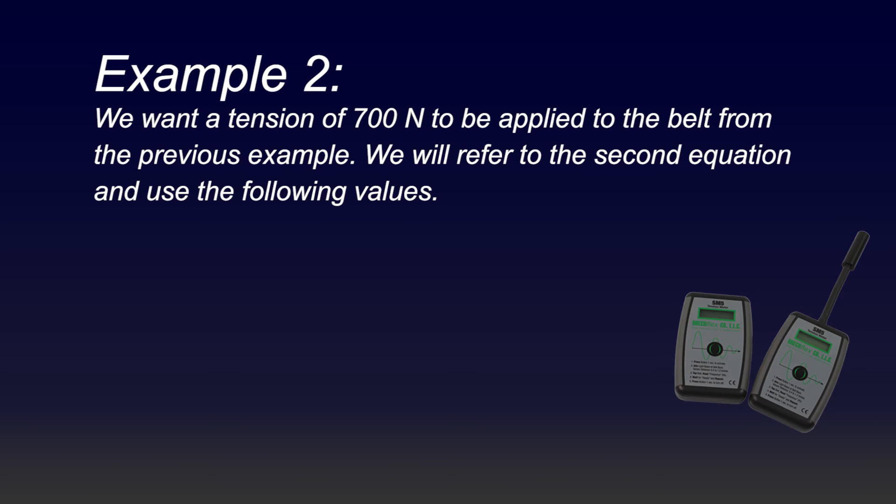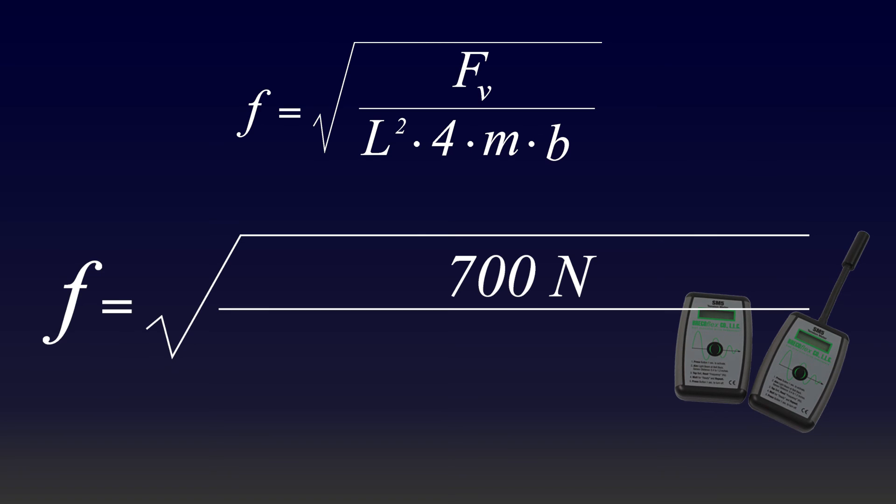Say we want a tension of 700 Newtons to be applied to a belt from the previous example. We will refer to the second equation and use the following values: 700 Newtons for the target pretension, 500 millimeters or 0.5 meters for the belt length, an AT10 belt with a belt mass of 0.058 kilograms per meter of belt length per centimeter of belt width, and b will be 5 centimeters of belt width.